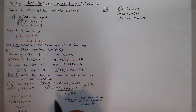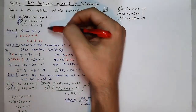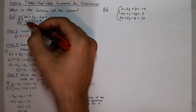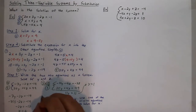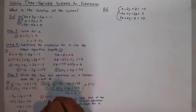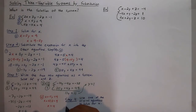Now I know that y is 1 and z is 6. For the last step, just pick one of the original equations to solve for x. I'm going to use the second equation, which is x plus 5y equals 9. With y equal to 1, x plus 5 times 1 equals 9, so x must equal 4. My final solution will be (4, 1, 6).